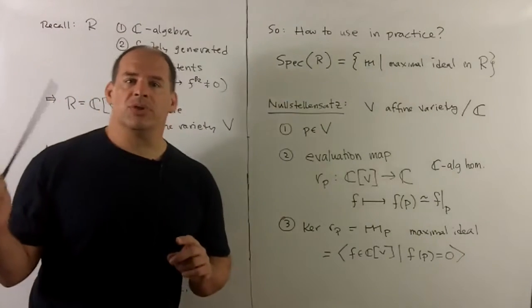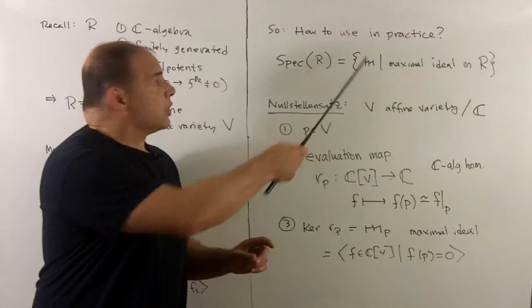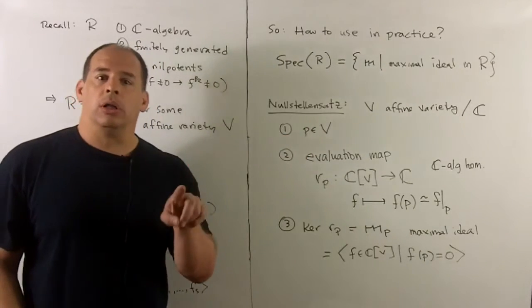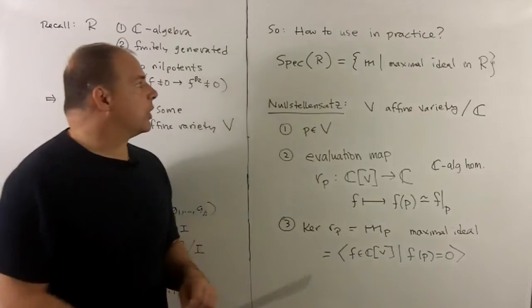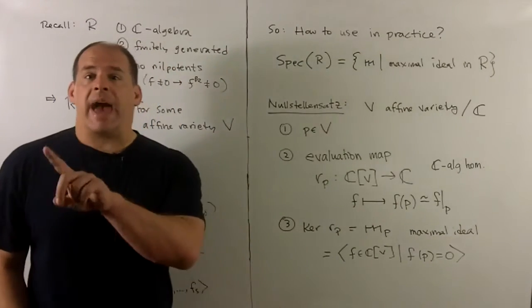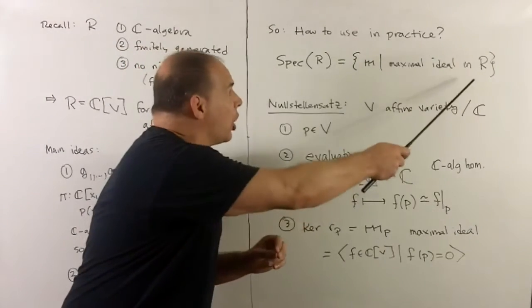Now, how does one use this in practice? It's very abstractly stated. So when I want to just pull geometric data off of a ring, what we'll use is what we call Spec of R. Spec, as a set, the points are just going to be all the maximal ideals in R.